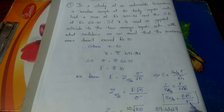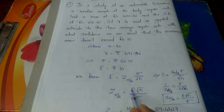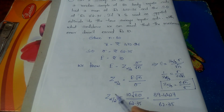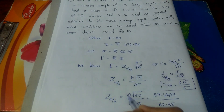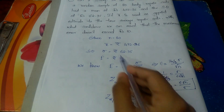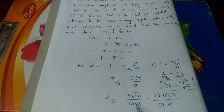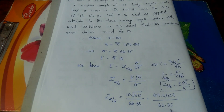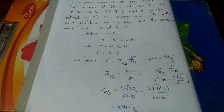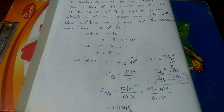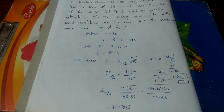Now substituting the values: Z alpha by 2 equals E into root n divided by sigma, which is 10 into root of 80 divided by 62.35. Root 80 equals 89.4427, so Z alpha by 2 equals 89.4427 divided by 62.35, which gives 1.4345. So the Z alpha by 2 value is approximately 1.43.